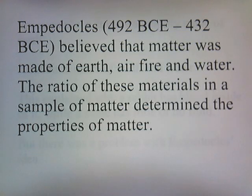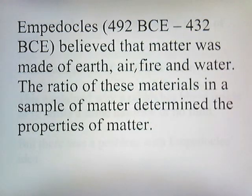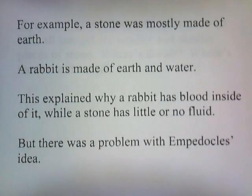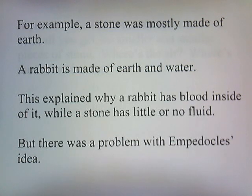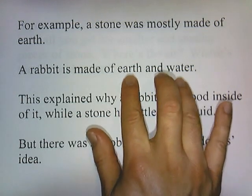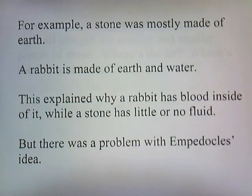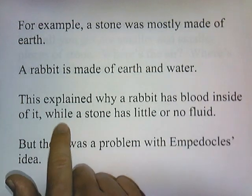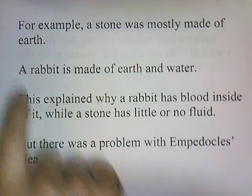Empedocles believed that matter was made of earth, air, fire, and water, and the ratio of these materials in a sample of matter determined the properties of matter. For example, a stone was mostly made of earth — probably a little bit of water, fire, and air, but mostly earth. A rabbit was also made of earth, air, fire, and water, but it was mostly made of earth and water. So if the proportions of earth and water were greater, you're more likely to get a rabbit. This explains why a rabbit has blood inside — it's mostly water — while a stone has little or no fluid, being more earth than water.